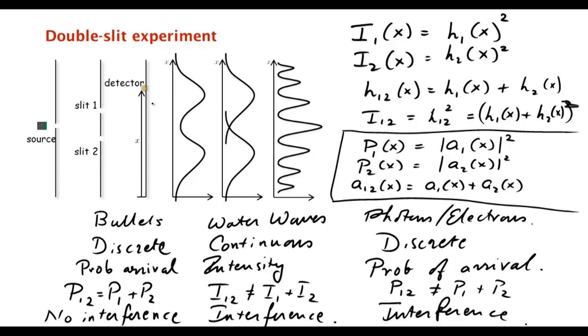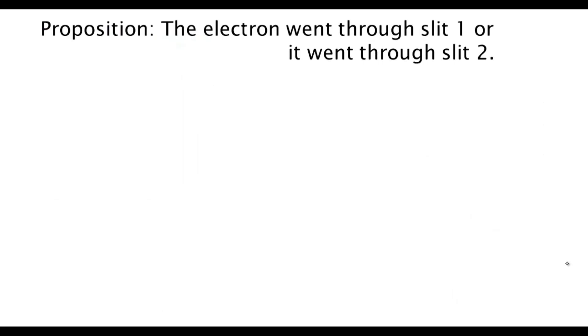First, let's write down a simple proposition which expresses our intuition about how a particle should behave. A particle is supposed to have a trajectory; you should be able to track its path.